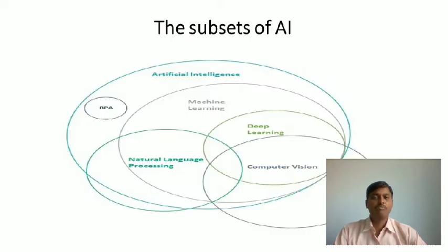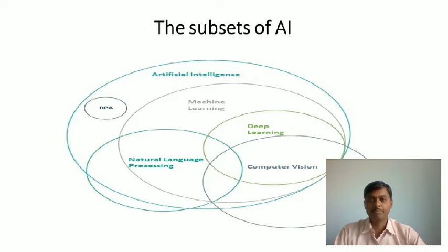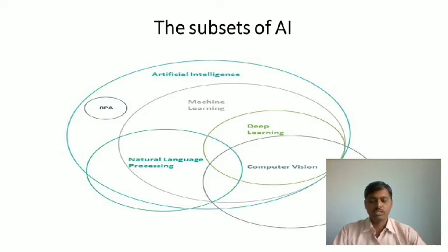The subsets of artificial intelligence constitute machine learning, deep learning, natural language processing, and computer vision, all of which are connected with robotic process automation (RPA). These technologies allow computer systems to perform tasks that normally require human intelligence, such as visual perception, speech recognition, and decision-making.